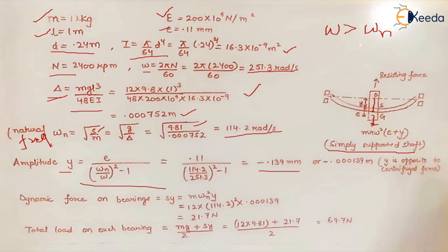What does this minus sign denote? This minus sign denotes that the direction of e and y are opposite. That means the shaft deflects in the opposite direction, not in the direction of e. If this is the direction of e, the shaft deflects in the opposite direction which is denoted by y.